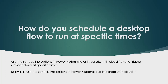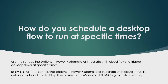The next question is: how do you schedule a desktop flow to run at a specific time? You can use the scheduling options in Power Automate or integrate with cloud flows to trigger desktop flows at specific times. For example, schedule a desktop flow to run every Monday at 8 AM to generate a weekly report. To do this, create a cloud flow and add a 'Run a Desktop Flow' action, then choose the desired desktop flow.